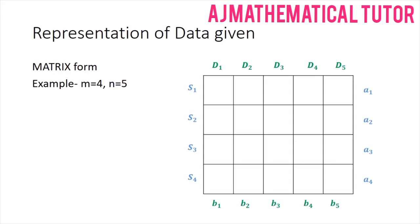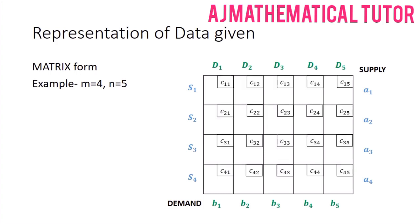These are also known as supply-demand problems. The cost of transportation from each source to each destination — denoted c11, c12, c13, and so on, with general notation cij — is also given. Each cij is written in the upper right corner of its corresponding cell. This completes the tabular representation of the transportation problem.